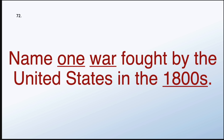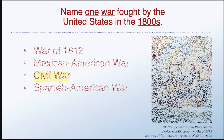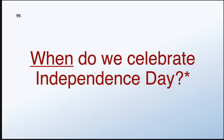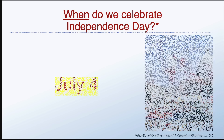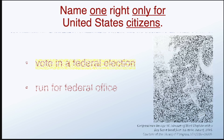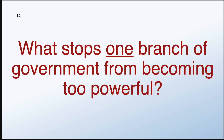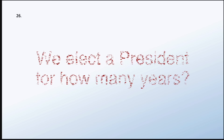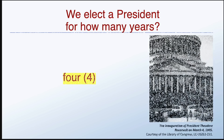Name one war fought by the United States in the 1800s. The Civil War. When do we celebrate Independence Day? July 4th. Name one right only for United States citizens. To vote in a federal election. What stops one branch of government from becoming too powerful? Checks and balances. We elect a president for how many years? Four.